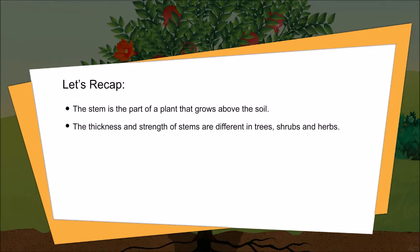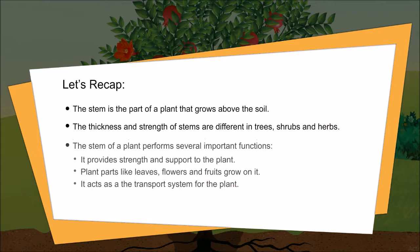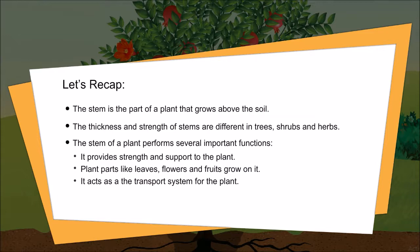Let's recap. The stem is the part of a plant that grows above the soil. The thickness and strength of stems are different in trees, shrubs and herbs. The stem of a plant performs several important functions: it provides strength and support to a plant; plant parts like leaves, flowers and fruits grow on it; and it acts as a transport system of a plant.